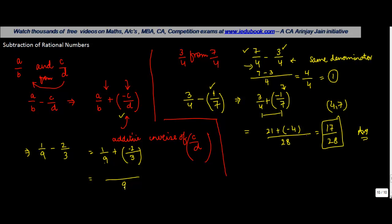9 goes into 9 how many times? 1. So 1 into 1 is 1 plus 9 when divided by 3 gives you 3. 3 when multiplied by minus 2 gives you minus 6. So this gives you minus 5 upon 9. So that's how basically you do the subtraction of rational numbers.